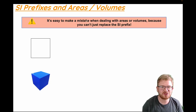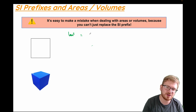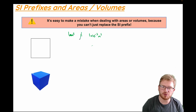The last thing to think about is SI prefixes when dealing with areas or volumes. A really common mistake at A-level is somebody writing: if given an area of one millimetre squared, that equals one times ten to the negative three metres squared. Really common, and completely wrong — it is not equal to that.